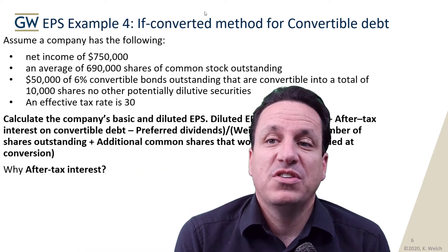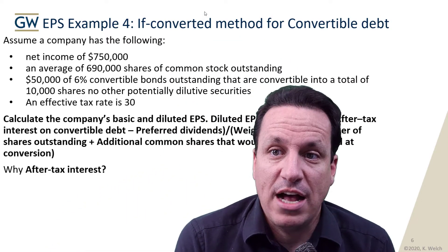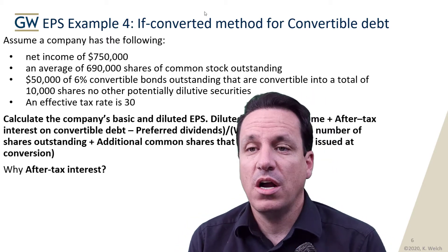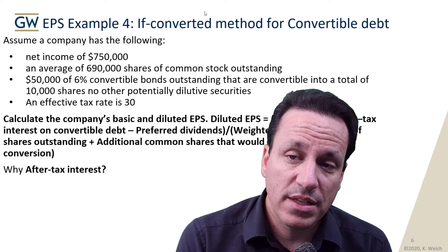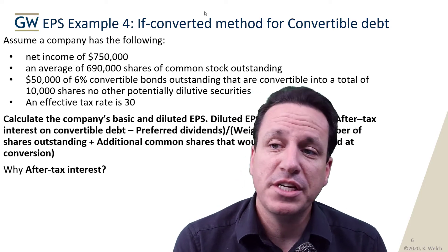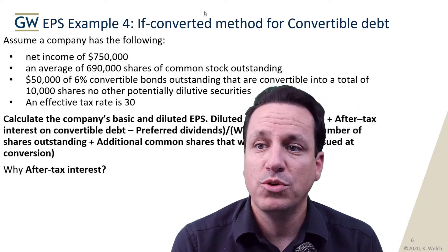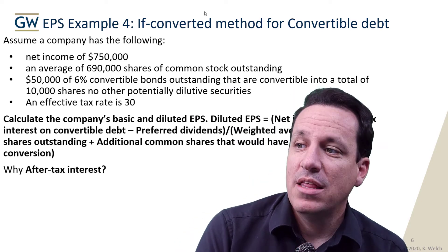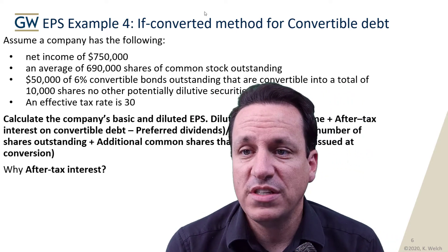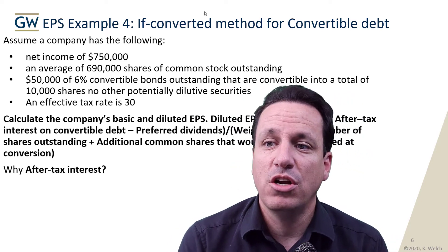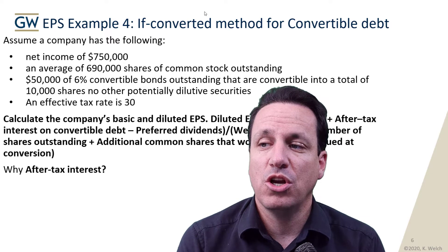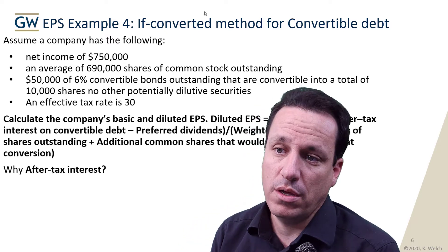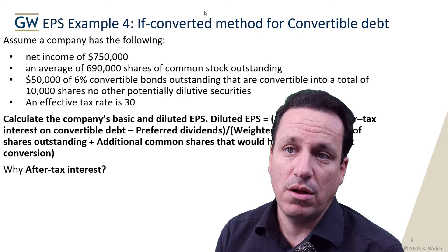Assume the company has the following: net income of $750,000, an average of 690,000 shares of common stock outstanding. They also have $50,000 of 6% convertible bonds outstanding that are convertible into a total of 10,000 shares, no other potentially diluted securities, and an effective tax rate of 30%.